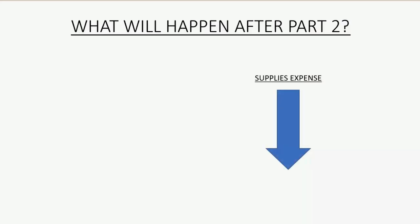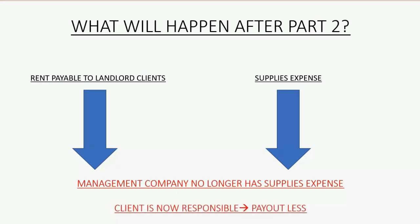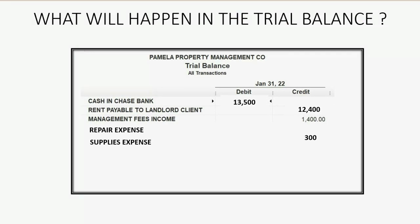Now we immediately do step two and bill the client. Once we bill the client, supplies expense will go down because our company no longer has that expense — the landlord client is now responsible. The rent payable to landlord clients will automatically decrease because the client is now responsible and the payout is less. In the trial balance we will no longer have supplies expense, and the future payout decreases by $300, becoming twelve thousand one hundred.